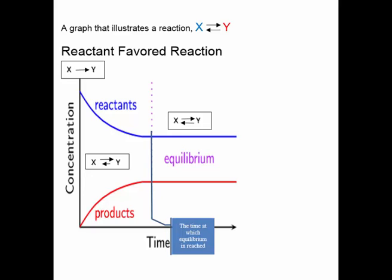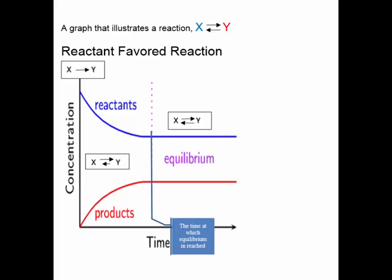Here we have a graph of another generic reaction, X transforming to Y, which is a reversible reaction that attains equilibrium. This is a so-called reactant-favored reaction, because at equilibrium the concentration of the reactant is greater than the concentration of the product. The reaction proceeds in a similar fashion: in the very beginning there is no reverse rate of reaction, but as the reaction proceeds, the product concentration begins to accumulate and gradually transforms itself back to the reactant — Y converting back to X. The rate of reverse reaction increases until it is equal to the forward rate of reaction when chemical equilibrium is attained.